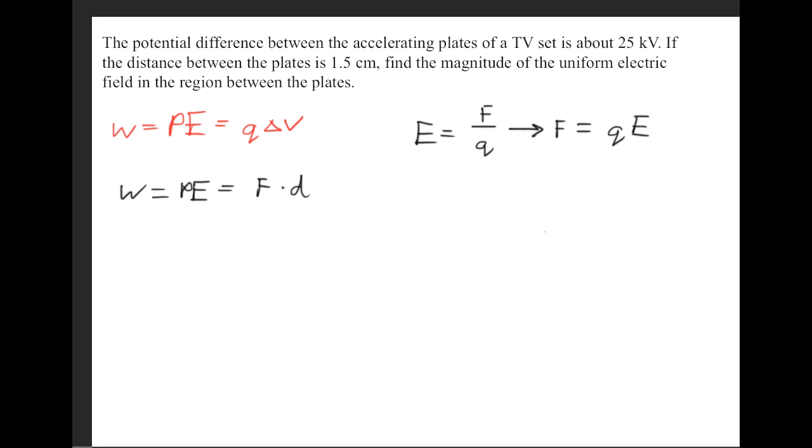Now we'll go ahead and make a substitution here. Now notice here that E times d, we have a formula for this. We said that the potential difference is equal to the electric field times the distance. So once more we'll make a substitution here and we'll get that the final form of this will look like W equals q delta V, and that is how we derive these equations.